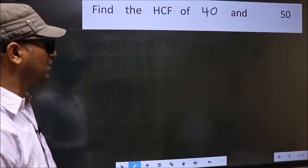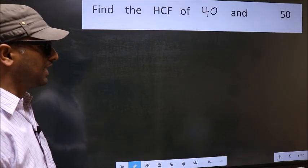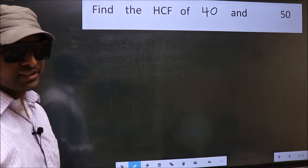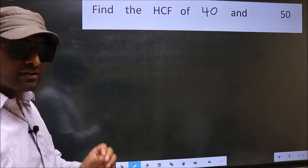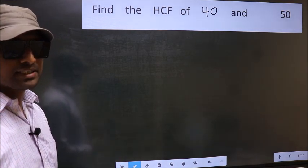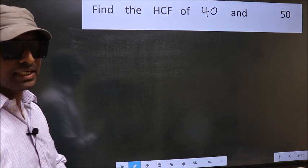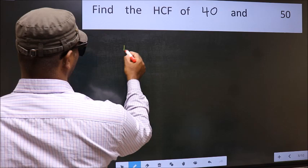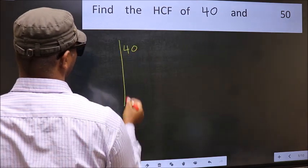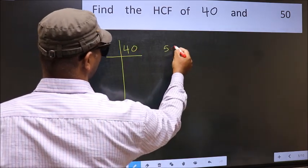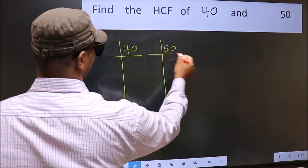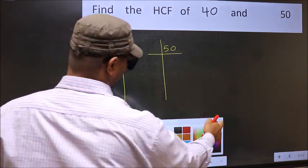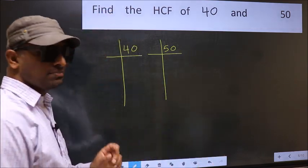Find the HCF of 40 and 50. To find the HCF, we should do the prime factorization of each number separately. What I mean is 40 and 50. This is your step 1.